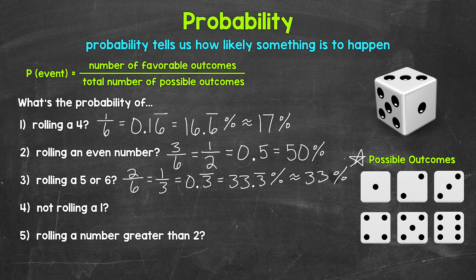Moving on to number four: what's the probability of not rolling a one? Our favorable outcomes are anything but one — so all numbers except one: two, three, four, five, and six. That gives us five favorable outcomes over six, the total number of possible outcomes. So our fraction is five over six — five sixths. We have a five out of six chance of not rolling a one. We're looking for anything but one — two, three, four, five, or six.